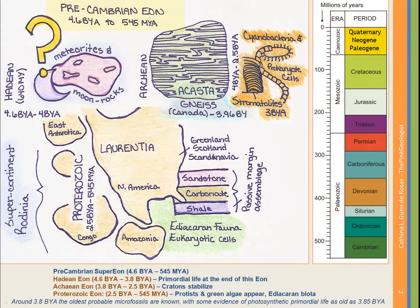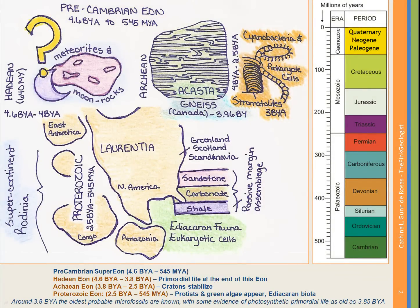We'll start our discussion with the Precambrian Super Eon. You'll notice I put 'Precambrian Eon' up there, but that's a little wrong — it's actually a Super Eon, which contains three eons. It covers so much of geologic time, and yet we have such a poor record of it that sometimes it's lumped together. The Super Eon goes from about 4.6 billion years ago — the age and formation of the Earth — to 545 million years ago.